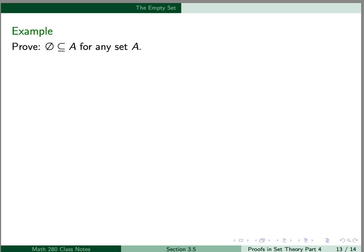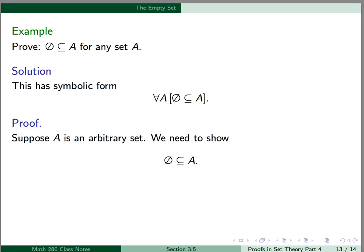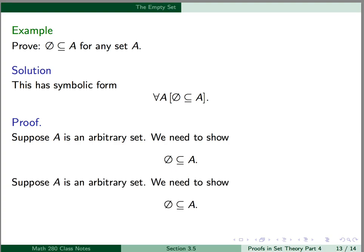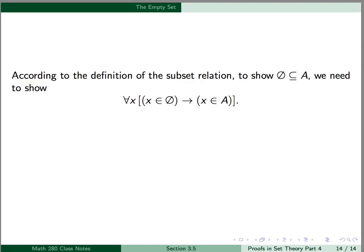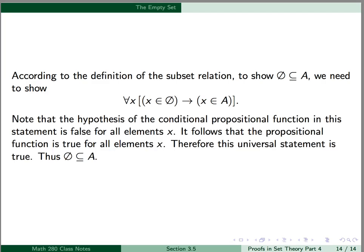As an example, we can prove that the empty set is a subset of A for any set A. Our symbolic form is: for all A, the empty set is a subset of A. We start our proof: suppose A is an arbitrary set, and we need to show the empty set is a subset of A. According to the definition of the subset relation, to show the empty set is a subset of A, we need to show: for all x, x is an element of the empty set implies x is an element of A. The hypothesis of this conditional propositional function is false for all elements x, since by definition, for all x, x is not an element of the empty set. It then follows that the propositional function itself must be true for all elements x. Therefore, this universal statement is true, and thus the empty set is a subset of A.